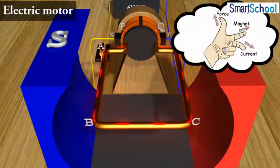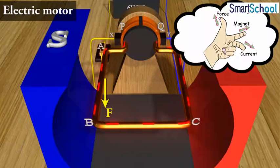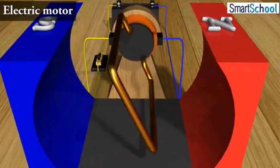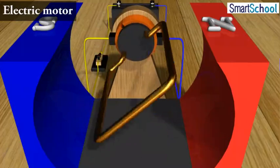On applying Fleming's left-hand rule for the direction of force on a current-carrying conductor in a magnetic field, we find that the force acting on arm AB pushes it downwards while the force acting on arm CD pushes it upwards. Thus, the coil and the axle O, mounted free to turn about an axis, rotates anti-clockwise.